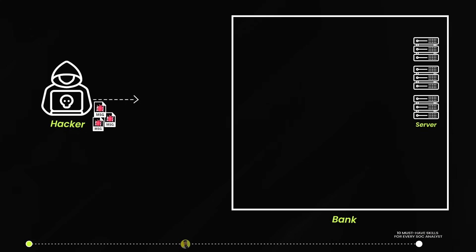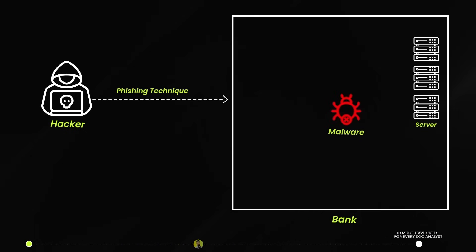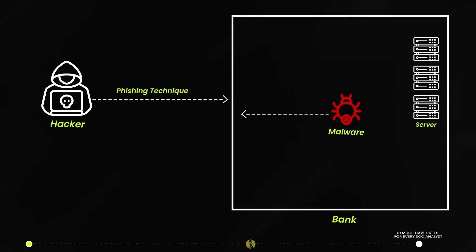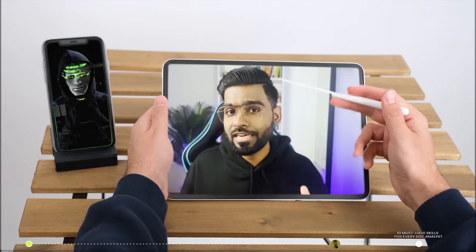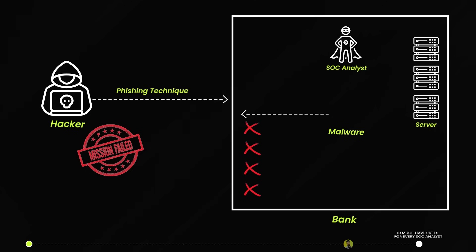Now let's talk about a good situation for the same company. The same hacker delivers malware inside the banking network using a phishing technique. At the last stage of his hacking, the malware tries to establish a connection but fails again and again. Mission failed for the hacker. This was possible because someone detected the malware and destroyed the malicious connection at the right time.